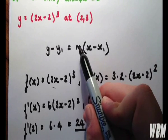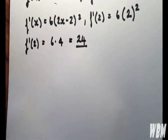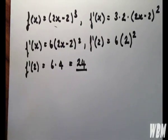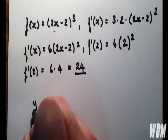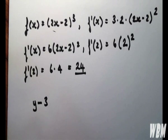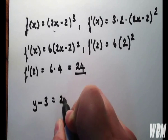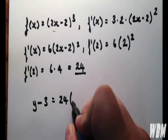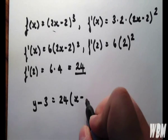So now we know that m equals 24, we can substitute that in and write the equation of a tangent line given a point. So we have y minus 3, because that's the y-coordinate that's been given, equal to 24(x minus the x-coordinate given, which is 2).